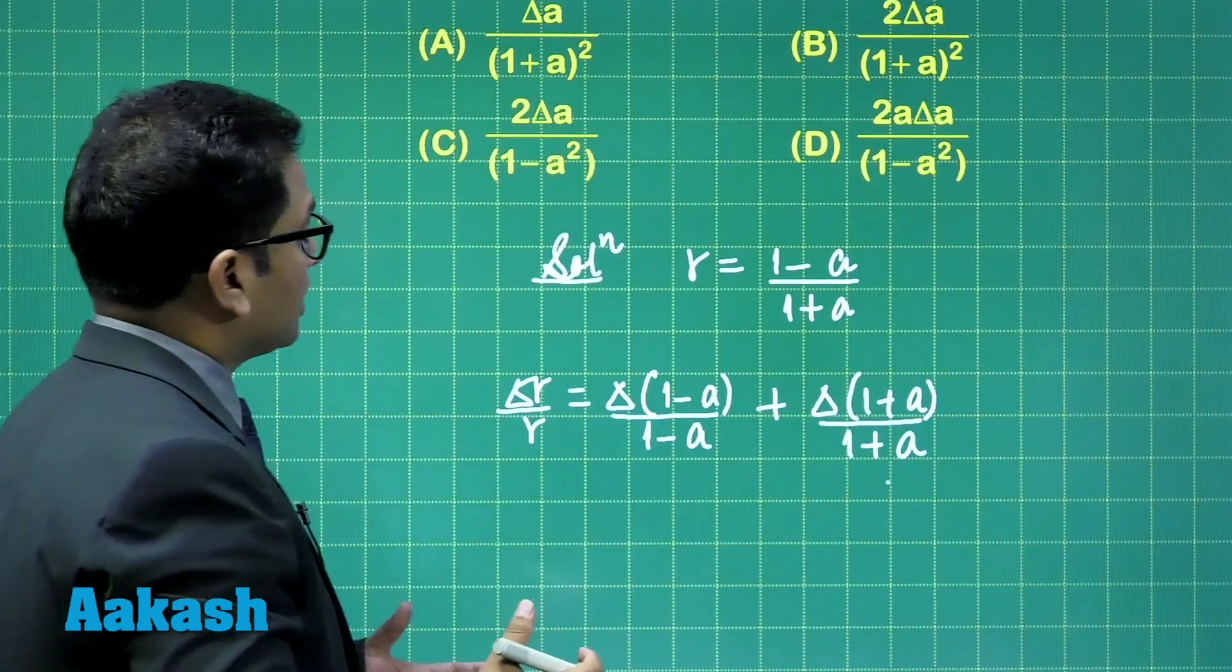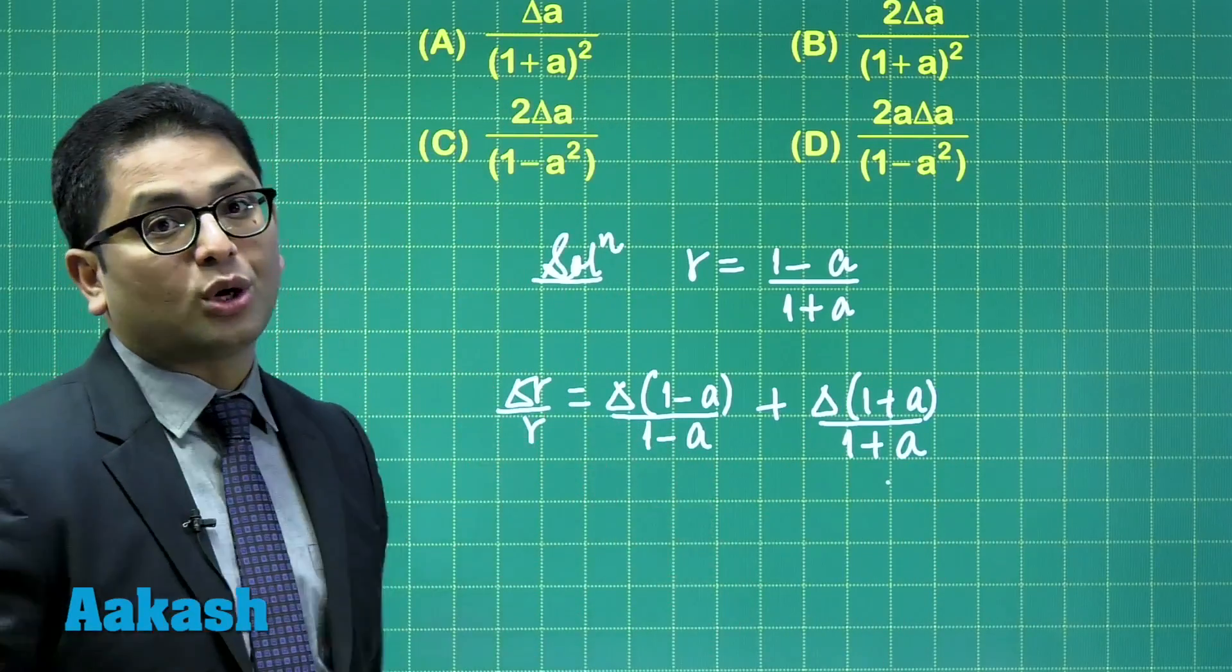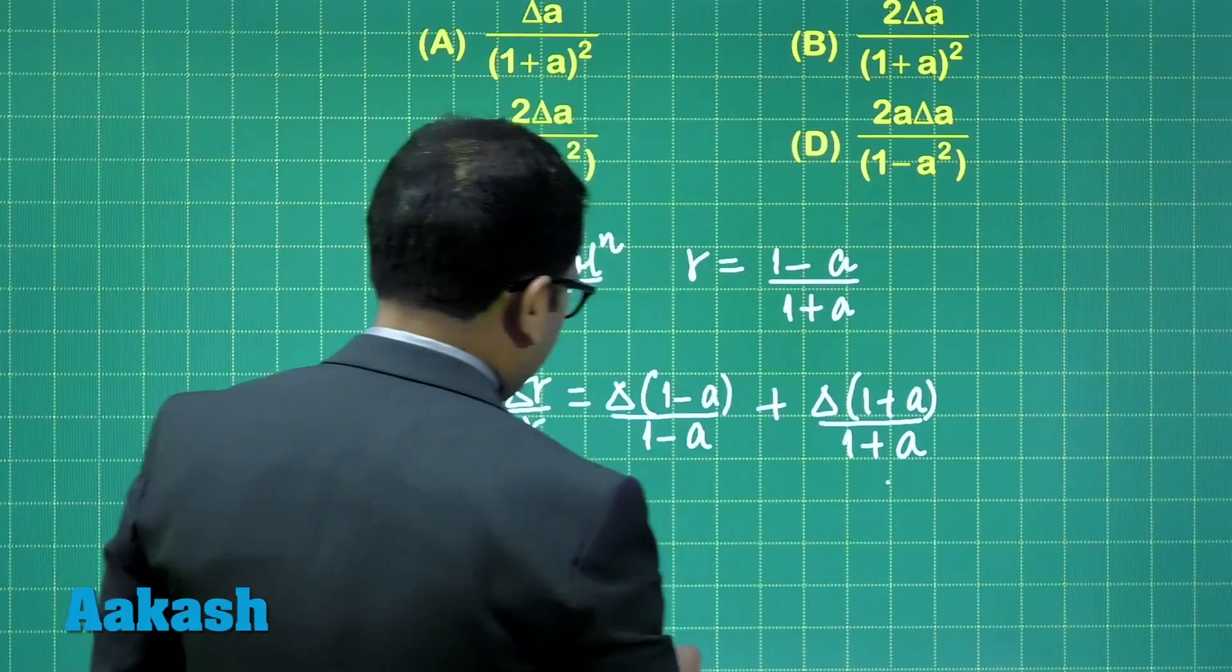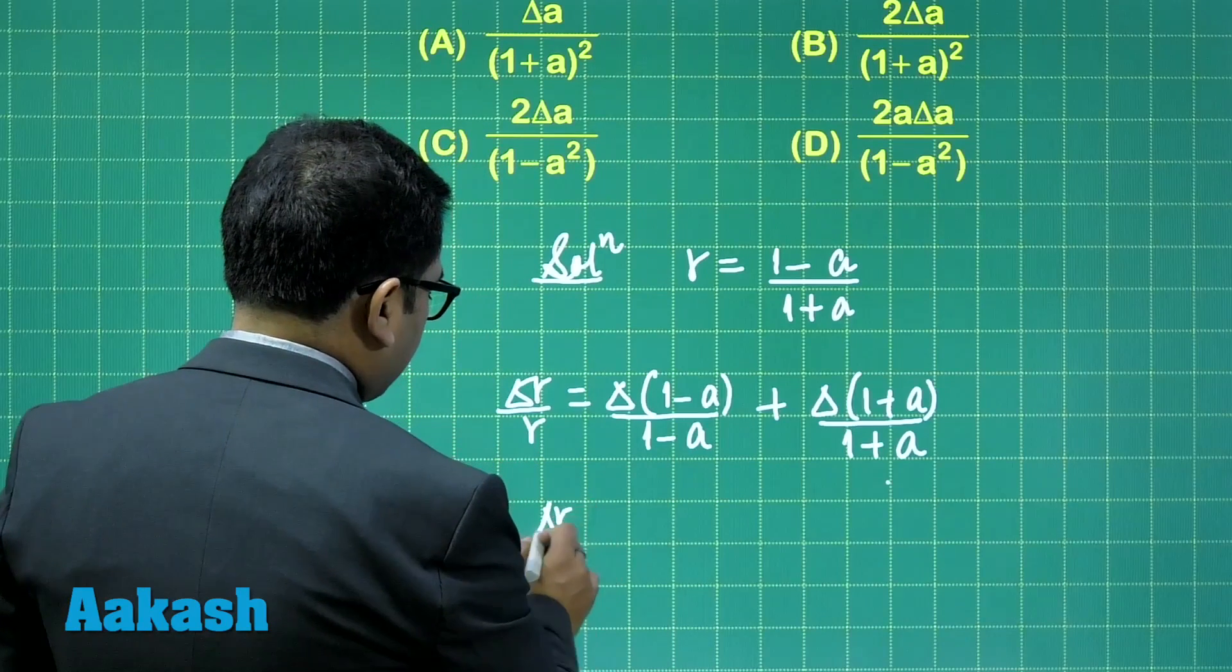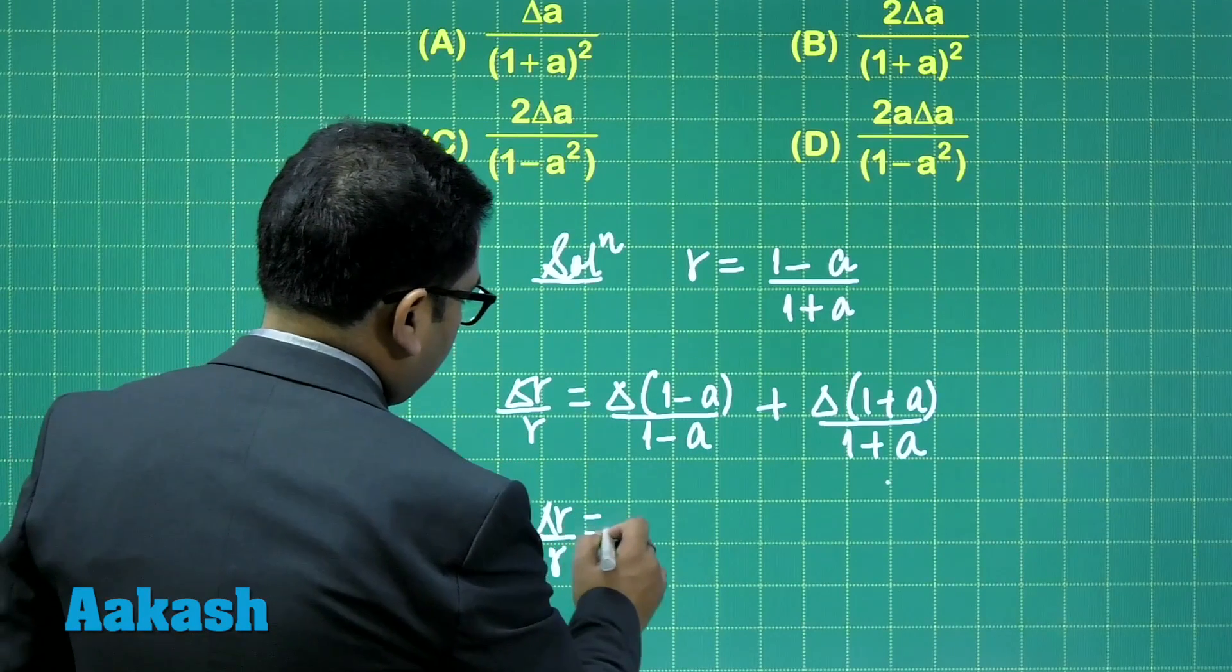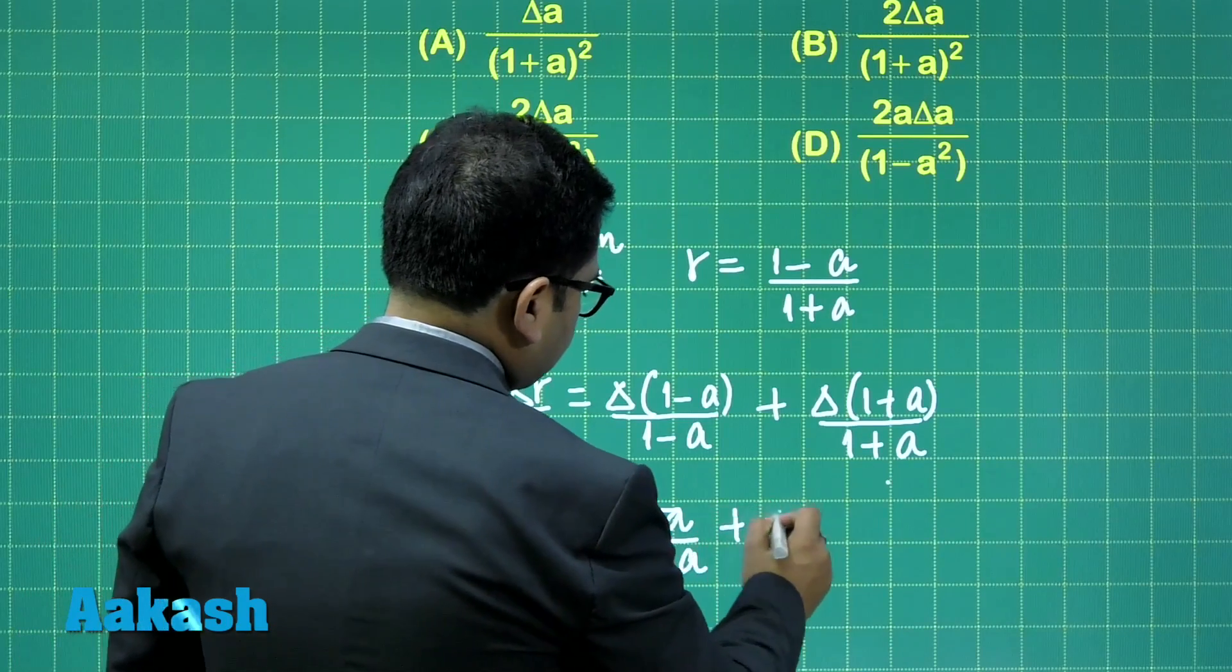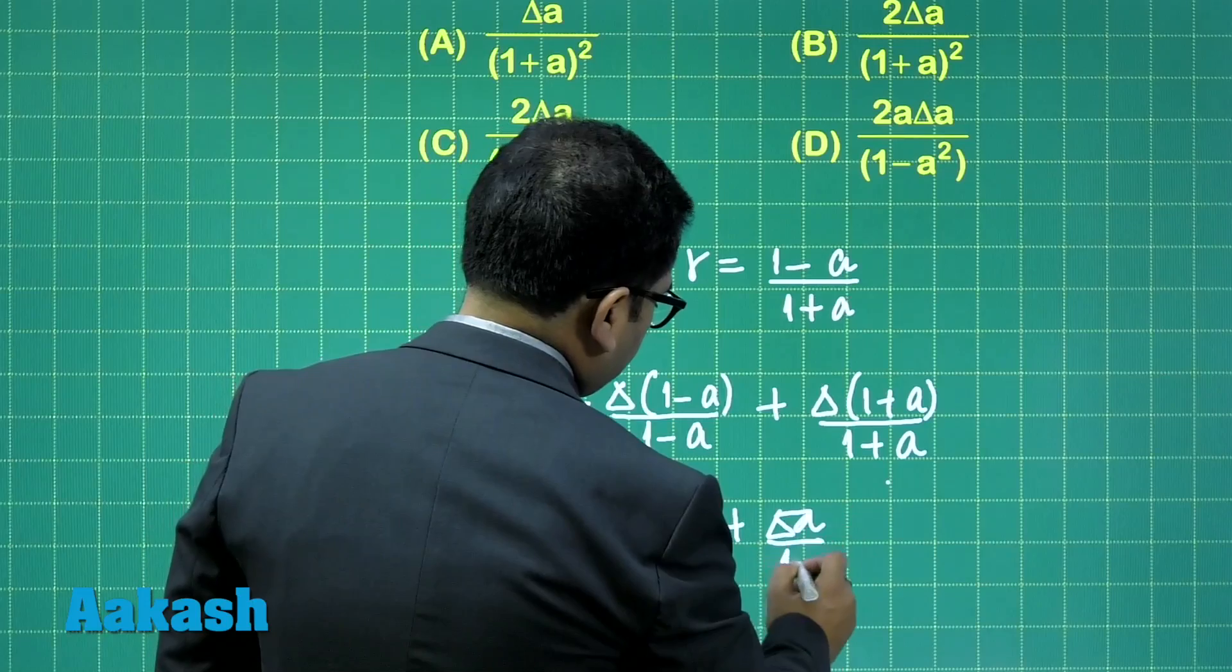Right? Straightforward, the error propagation rule of division that has been applied. And remember, we are in the process of calculating maximum possible error. So delta r by r is going to be delta a by (1 minus e) plus delta a by (1 plus e).